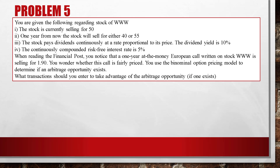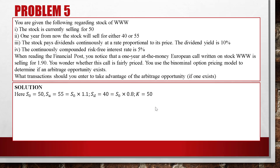This problem is similar to problems 1 and 3, but with dividend yield δ = 10%. Summarizing: S0 = 50, SU = 55 = S0 × 1.1, SD = 40 = S0 × 0.8. Since it is an at-the-money call, the strike equals the initial stock price of 50. CU = 55 − 50 = 5, and CD = 0 (since 40 − 50 < 0).